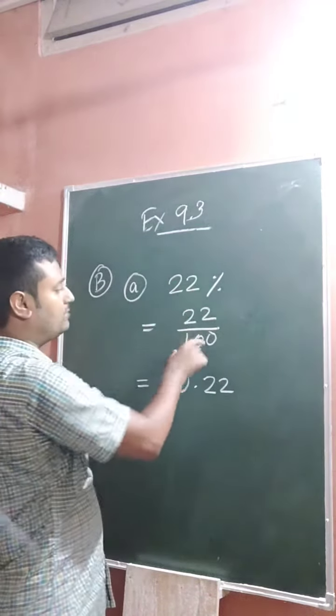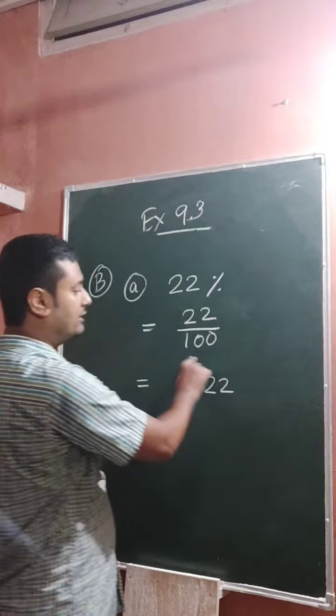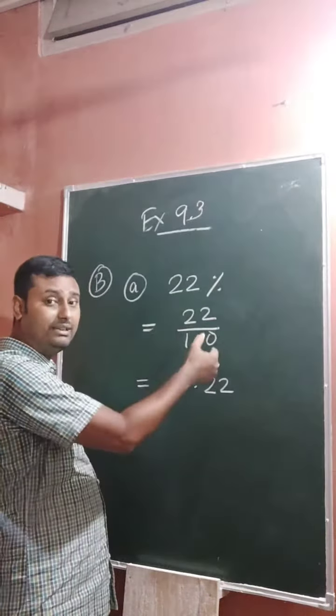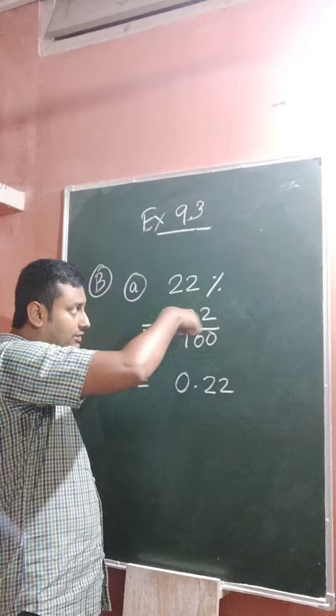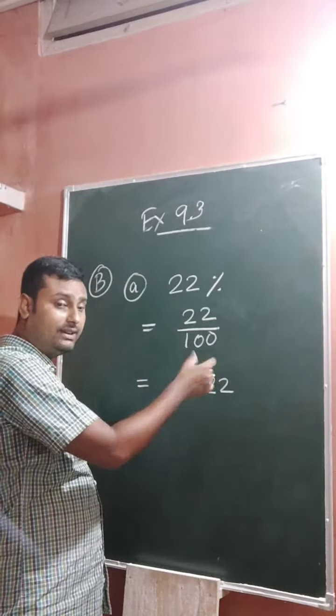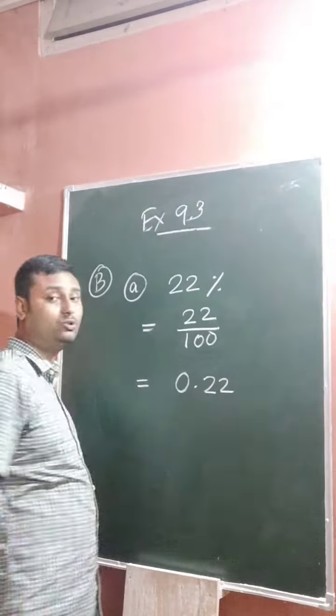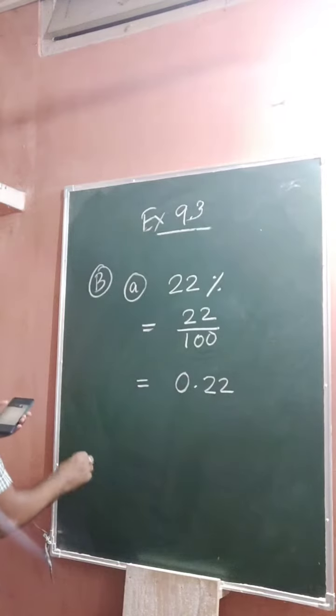So 22 by 100: when the denominator has two zeros, that means the numerator you have to write in this way - after the decimal there must be two digits.